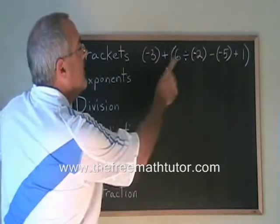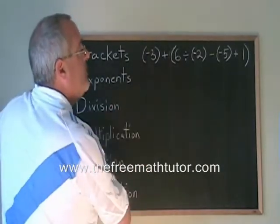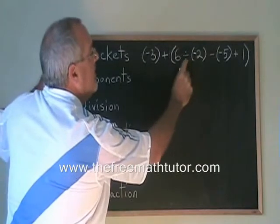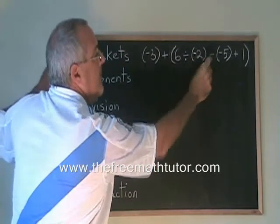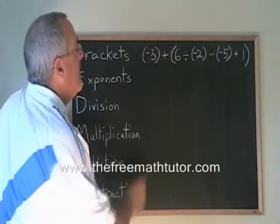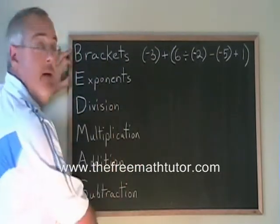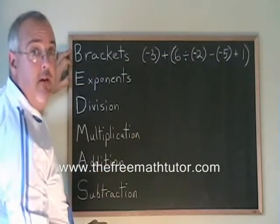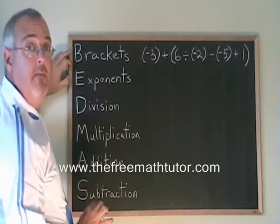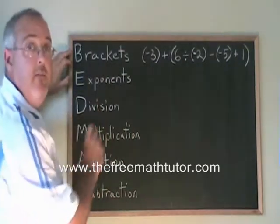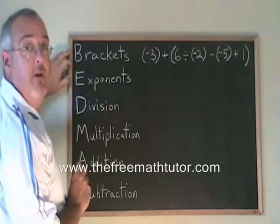We have a bracket, we have division, we have pluses and minuses, and we have several negative numbers involved. If we apply the rules of BEDMAS and apply the laws of integers, this should be no problem. Do one thing at a time and write a new line for each operation you do.